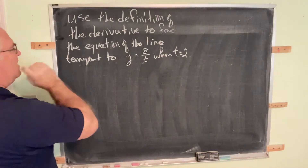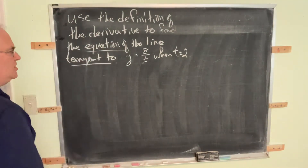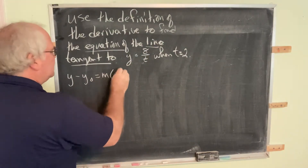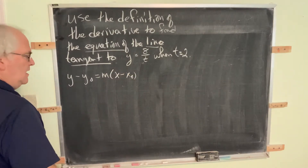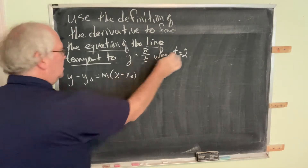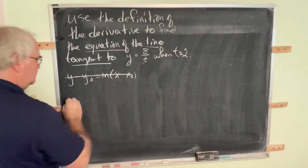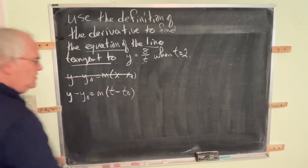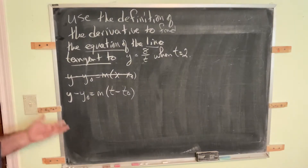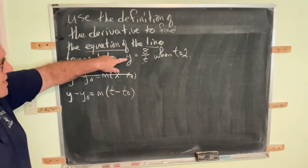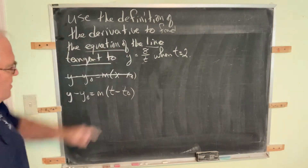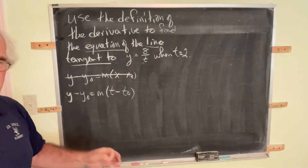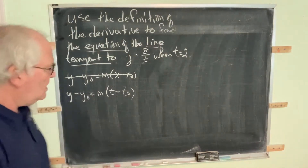We're asked to find the equation of the tangent line, so we know y minus y₀ equals slope times (x minus x₀). Except now we don't want to use x — we want to use t. So y minus y₀ equals slope times (t minus t₀). The specific letters we choose to represent variables are irrelevant.